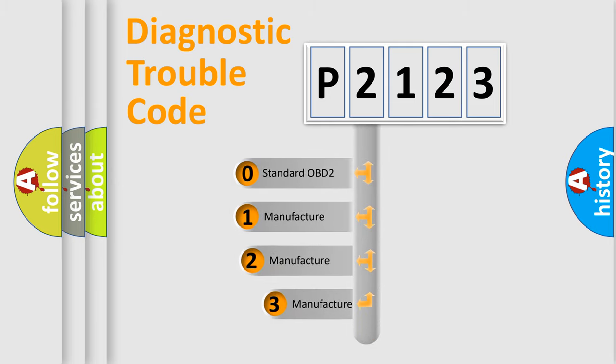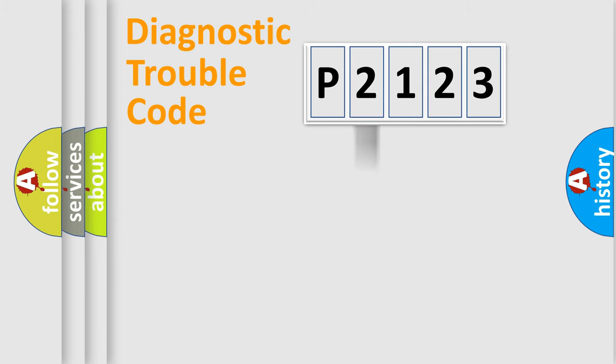If the second character is expressed as zero, it is a standardized error. In the case of numbers 1, 2, or 3, it is a more prestigious expression of the car specific error.